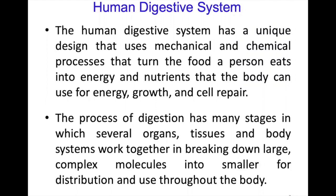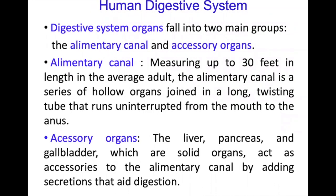The process of digestion has many stages in which several organs, tissues and body systems work together in breaking down large complex molecules into smaller ones for distribution and use throughout the body. Digestive system organs fall into two main groups: the alimentary canal and the accessory organs.